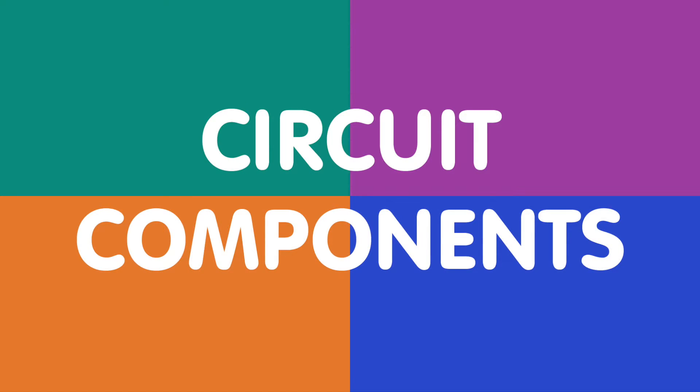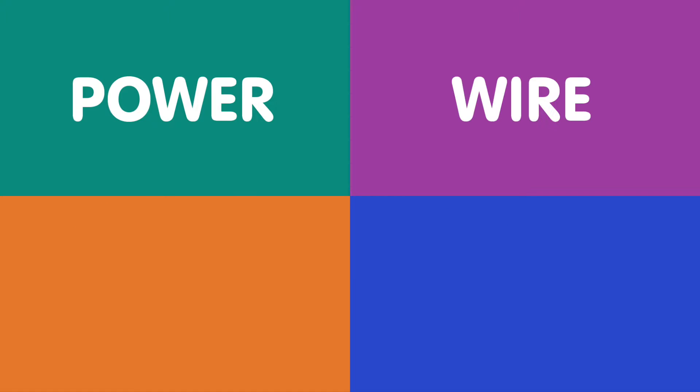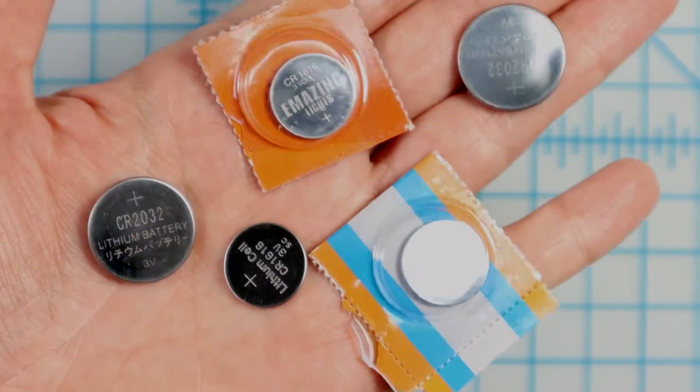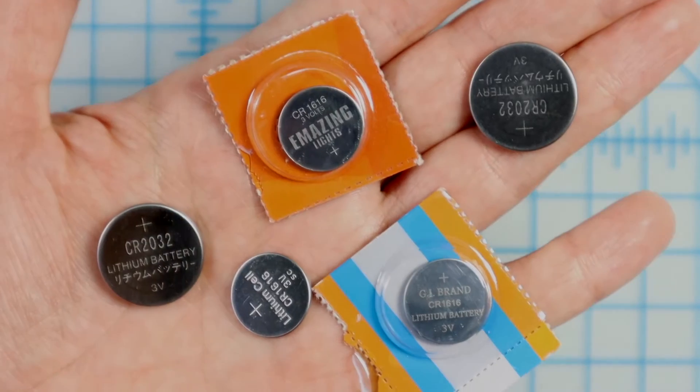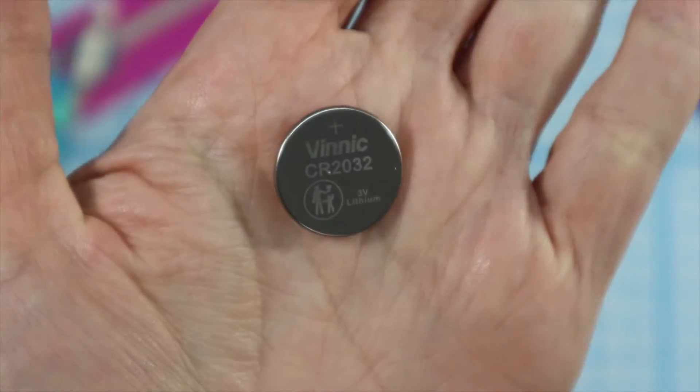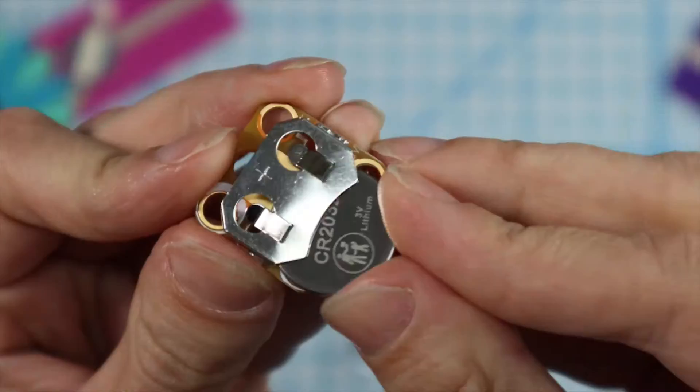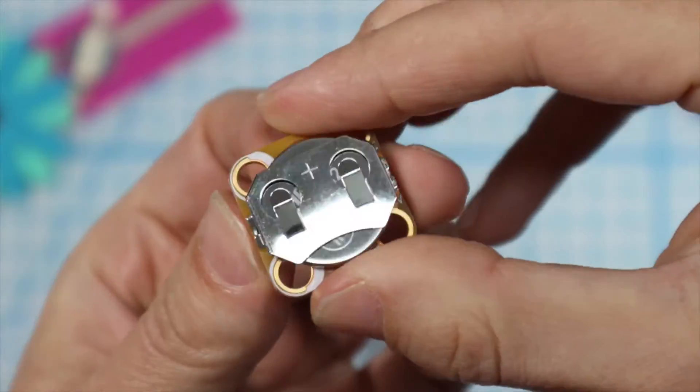Circuits have four main components: a power source, wire, outputs, and inputs. For wearables, we use coin cell batteries because they're lightweight and small. We typically use CR2032 batteries because they're common and fit in the Crazy Circuits battery holder too.